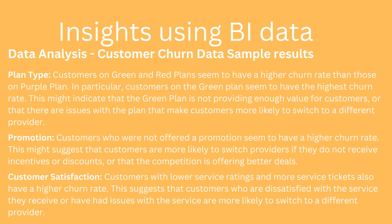Another example that came to mind was using some BI data to get some insights, and this particular time was around customer churn data — that's a sample data set from Click. I used some of those records; ChatGPT doesn't allow you to use all the records because the data set is too big. But after showing those records, the suggestions that came back included altering the plan type, maybe looking at promotions and customer satisfaction. It's a little bit different from machine learning, but it was really quite insightful.